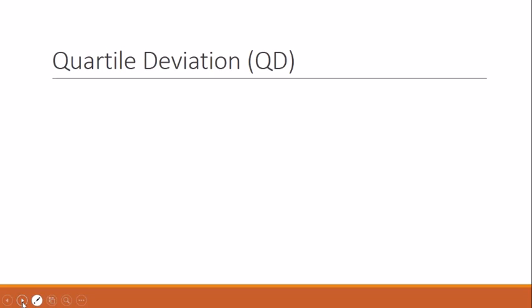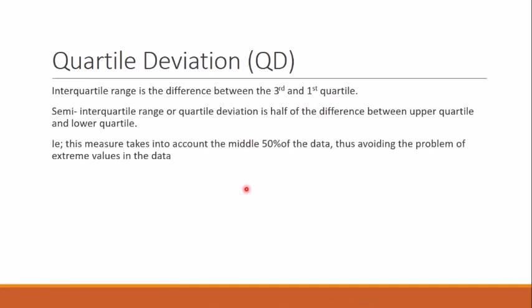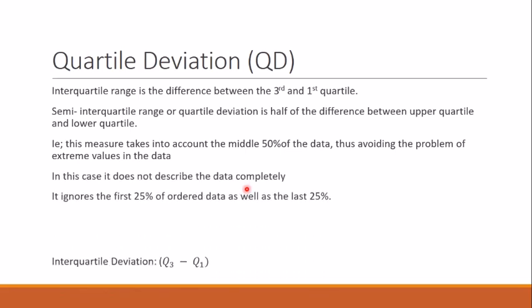Now that we know Q1 and Q3, we study the interquartile range. The interquartile range includes the middle 50% of the distribution — one quarter of observations at the lower end and another quarter at the upper end are excluded. In other words, the interquartile range is the difference between the third and first quartile: IQR = Q3 minus Q1.